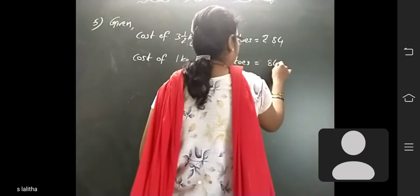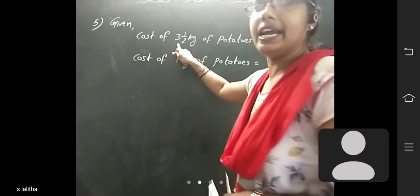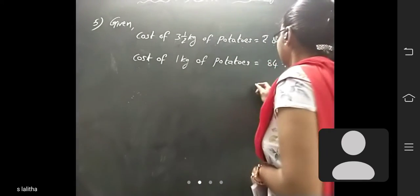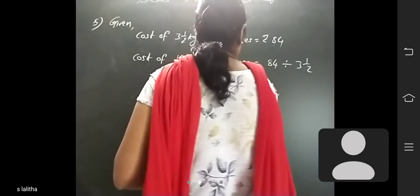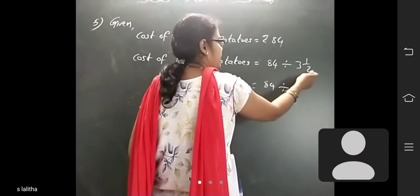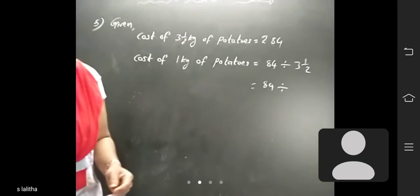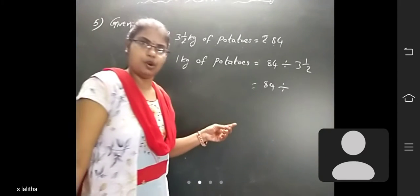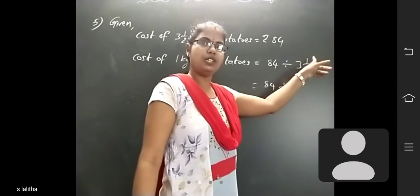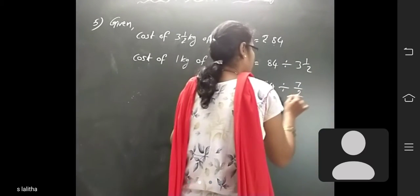So 84 rupees divided by how many cases? 3 and a half cases. So 84 divided by 3 and a half — it is a mixed fraction. You have to convert it first into an improper fraction: 2 × 3 = 6, 6 + 1 = 7, so it becomes 7 by 2.